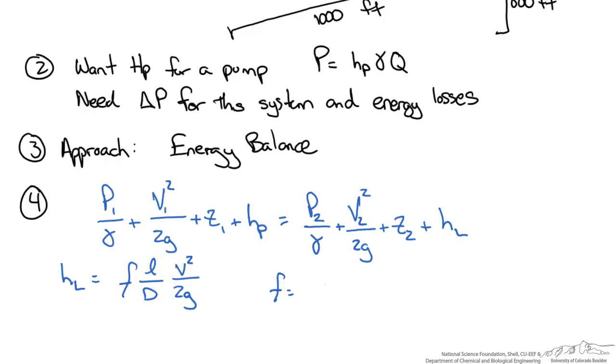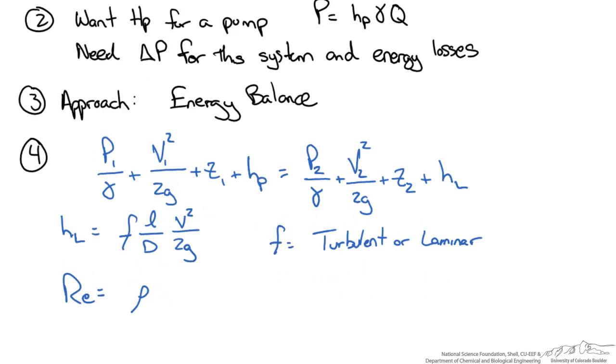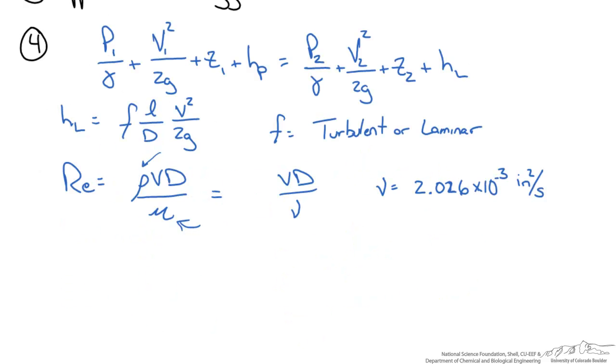The frictional factor depends on whether the flow is turbulent or laminar. We need the Reynolds number, which is a relationship of inertial forces, written as ρVD over the viscous forces, or velocity times diameter over kinematic viscosity. The kinematic viscosity for water at 10°C is 2.026 × 10⁻³ inches squared per second.